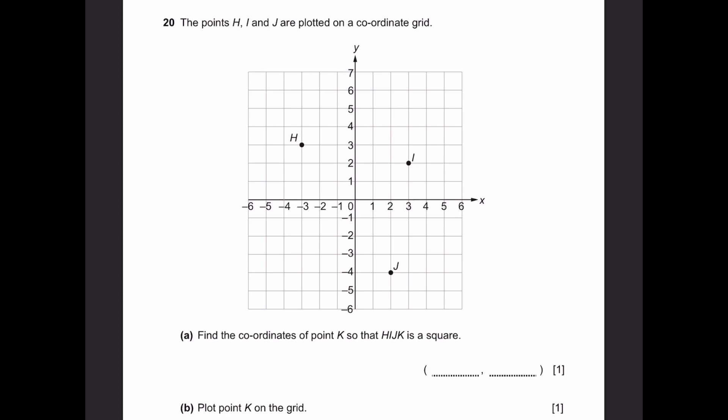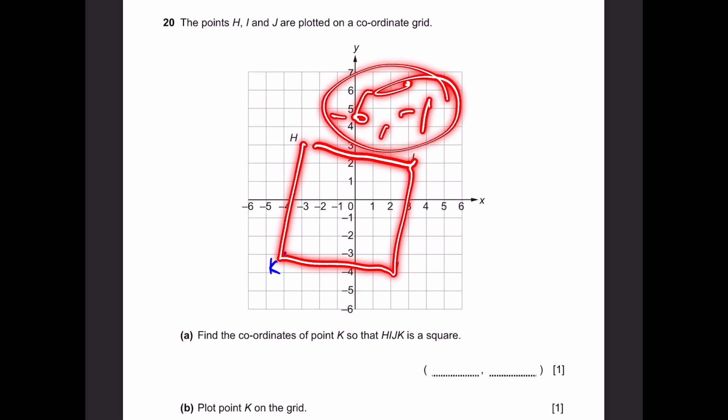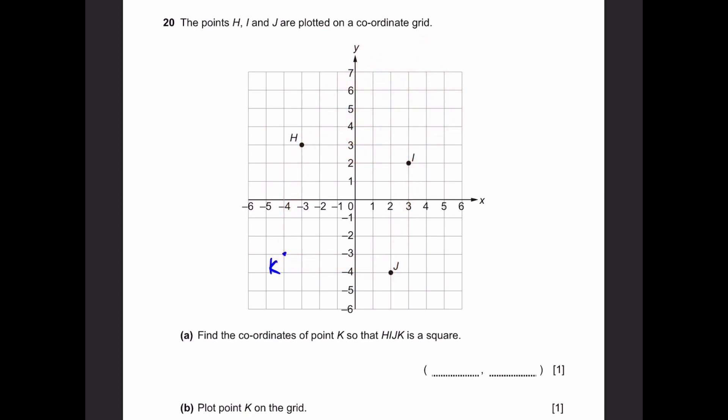Question 20. The points H, I, and J are plotted on a coordinate grid. Find the coordinates of point K so that H, I, J, K is a square. The distance over here is 6x and minus 1y, and then minus 6y minus 1x. So the distance here will be minus 6x and then 1y up. So the point minus 4 comma minus 3 is point K. If you draw lines and check, all of them will be minus 6 and minus 1. One is the x value, other is y. If you actually draw the lines and measure the length, it'll all be equal. Also, the angles will be 90 degrees between every single line. Part B, plot point K on the grid.